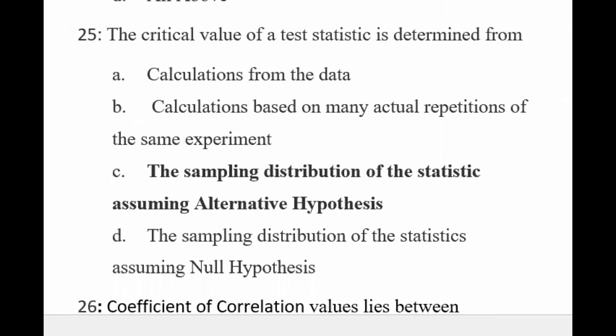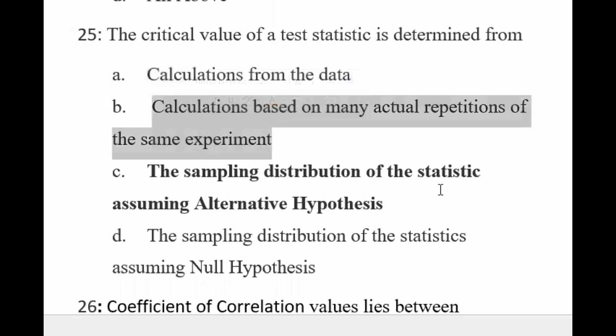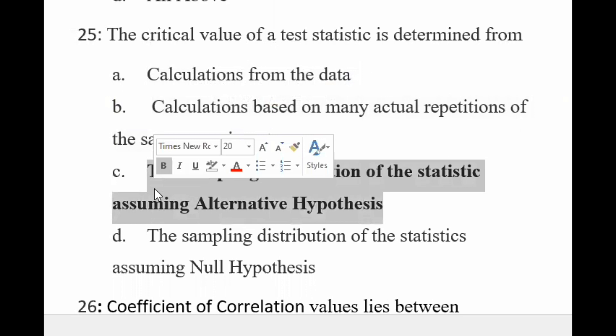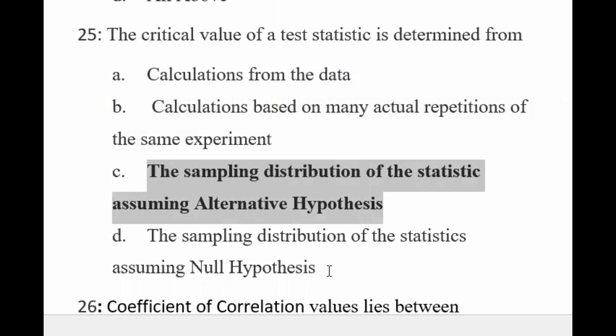Critical value of a test statistic is determined from where? 'Calculation from data' — nahi. 'Calculation based on many actual repetitions of the same experiment' — nahi. 'The sampling distribution of the statistic assuming the alternate hypothesis' — hamare paas alternate hypothesis se aati hai jo hamare paas research hypothesis hota hai, aur wahan se critical value hoti hai. The sampling distribution assuming the null hypothesis is what we check in favor of the alternate (research) hypothesis — aur jis pe sample-based data liya hota hai, usi se critical value aati hai.